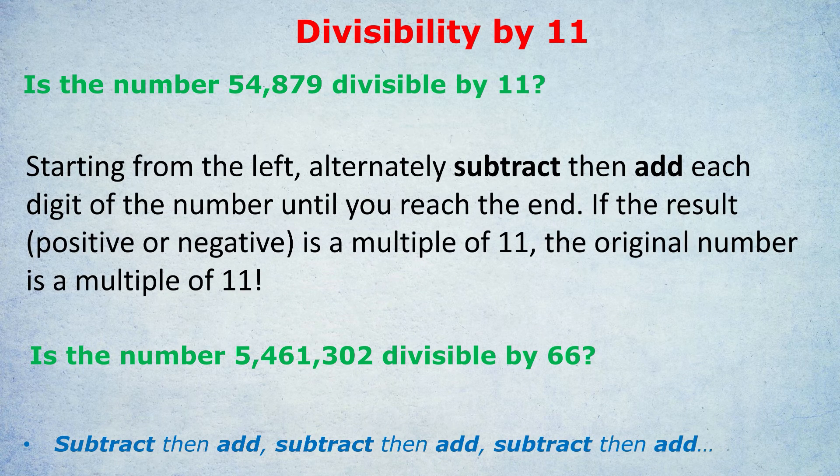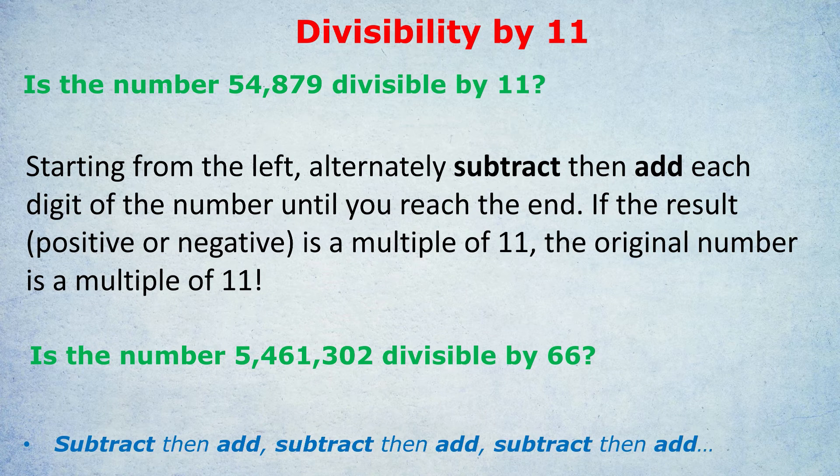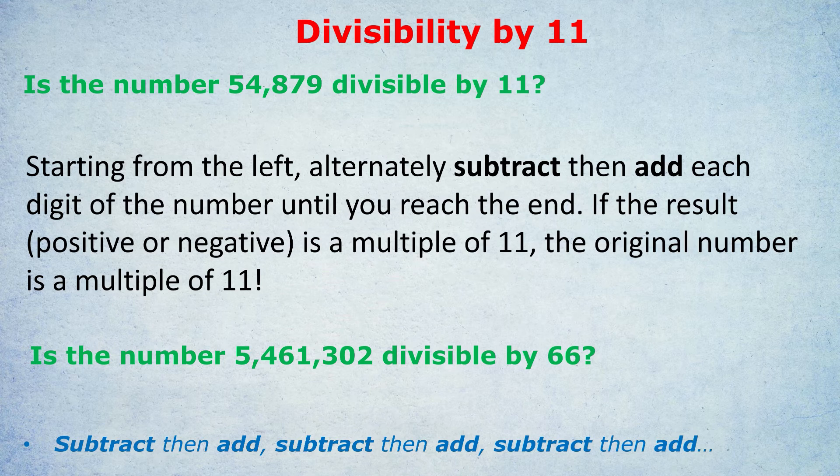Let's answer that first question then. If you want, if you feel confident already, you can try yourself by pausing, or you can watch me do the first one and then maybe try yourself the last one, the ultimate one. So for our number at the top, 54,879, we do 5, take away, subtract 4, that's 1, add 8, that's 9, take away 7, that's 2, plus 9, that's 11.